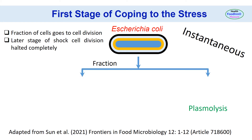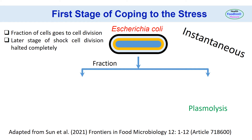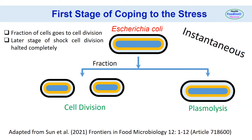In some instances — for example, in the early stage of hyperosmotic shock in E. coli — a fraction of cells undergoes cell division in addition to plasmolysis. At a later stage of shock, cell division stops completely. That is, hyperosmotic shock caused a transient increase in the cell division rate, and cell stiffness is an important factor in this process.